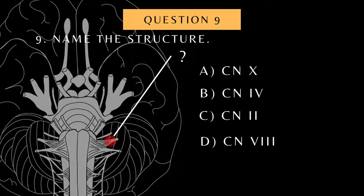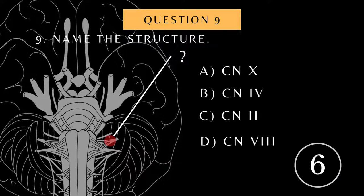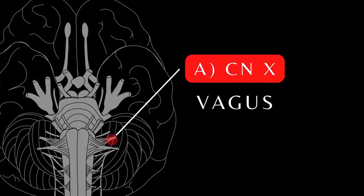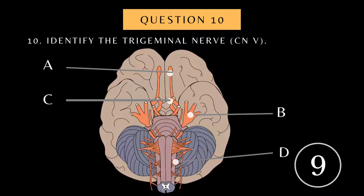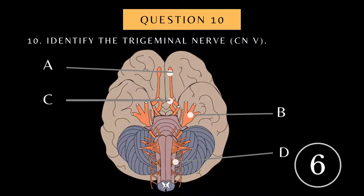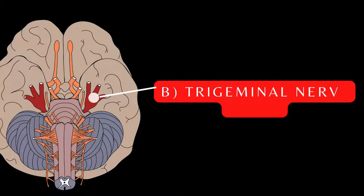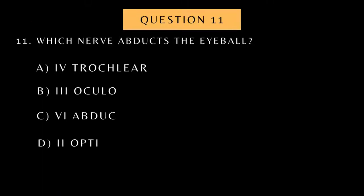Name the structure. Identify the trigeminal nerve. Name the trigeminal nerve. Which nerve abducts the eyeball?